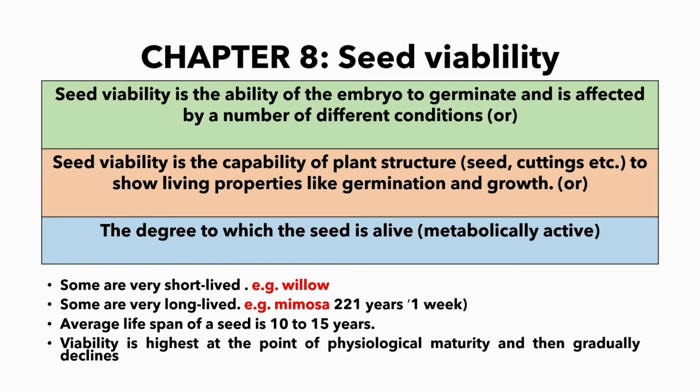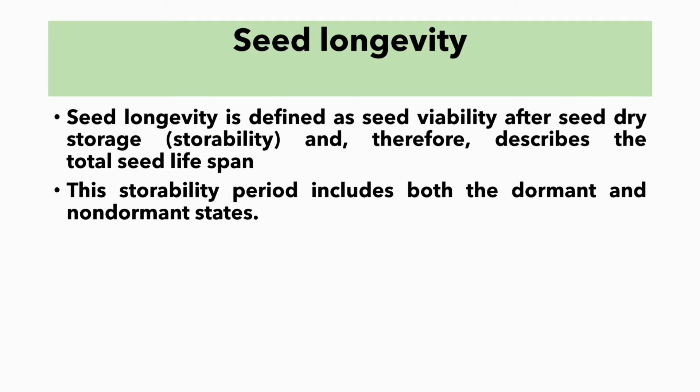Let us see some examples of seed viability. Some seeds are very short-lived — example: willow. Some are very long-lived — example: mimosa, which has seed viability for 221 years. The average lifespan of a seed is 10 to 15 years. Viability is highest at the point of physiological maturity and then gradually declines.